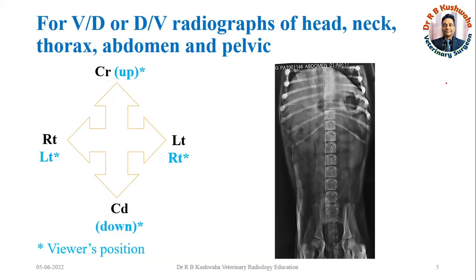For the ventral-dorsal or dorsal-ventral radiograph of the head, neck, thorax, abdomen, and pelvis: the radiograph should be displayed on the X-ray illuminator such that the head or cranial part of the body is on the top of the illuminator, while the caudal or tail of the body is at the bottom. The left side of the abdomen is towards the right side of the viewer or radiologist, whereas the right side of the abdomen is towards the left side of the viewer.